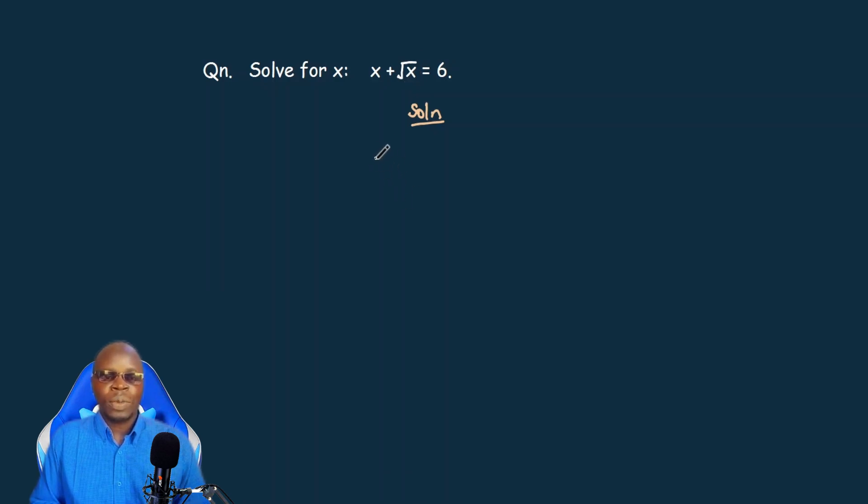So let's recopy our question down here and we have x plus the square root of x equals 6. So we need to take the x without the square root sign to our right hand side and we have square root of x equals 6 minus x.